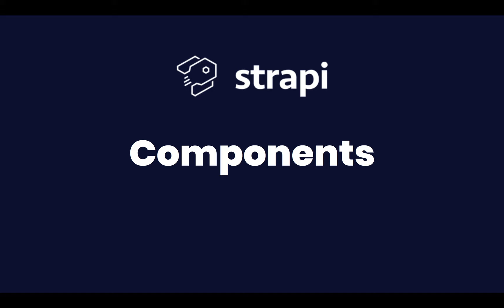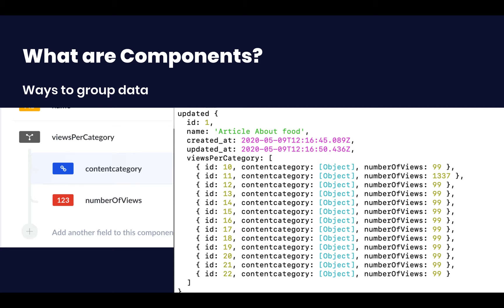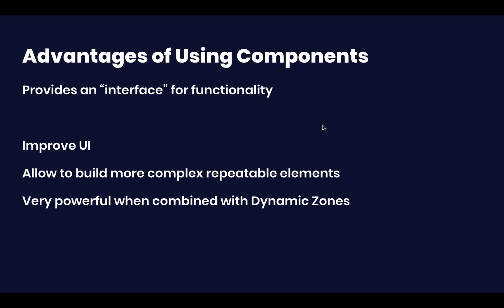In this video I'm going to be covering components, which are an addition from the beta version of Strapi. Components are basically a way for us to specify how certain data looks. Here on the left you can see a component called 'views per category', which is a repeatable component containing a relation with a content category and an integer variable called 'number of views'.